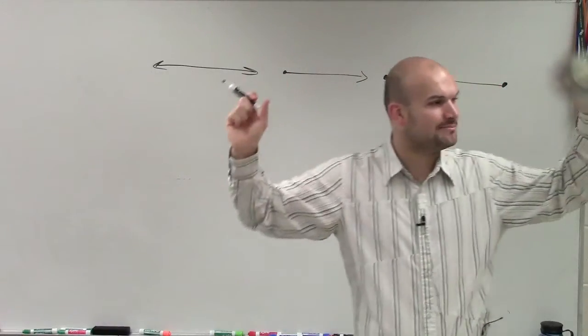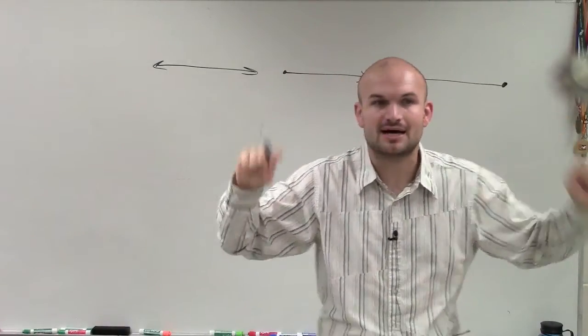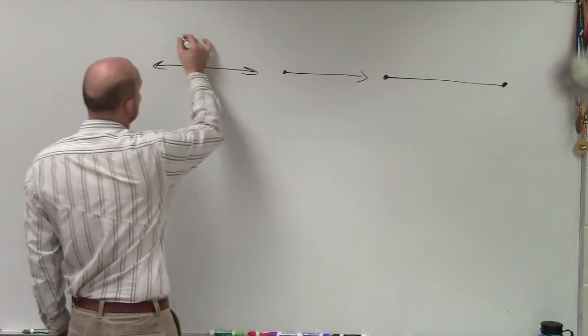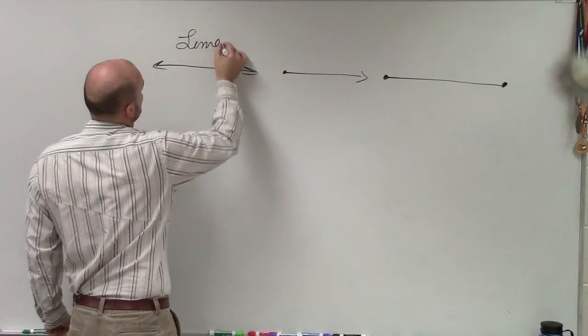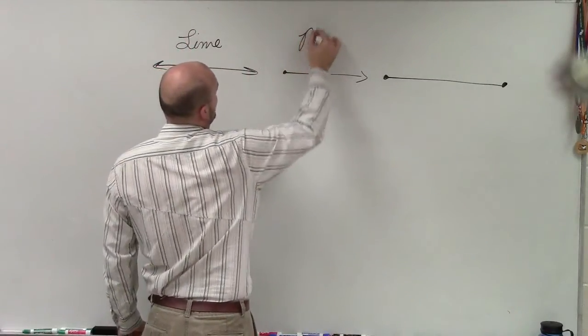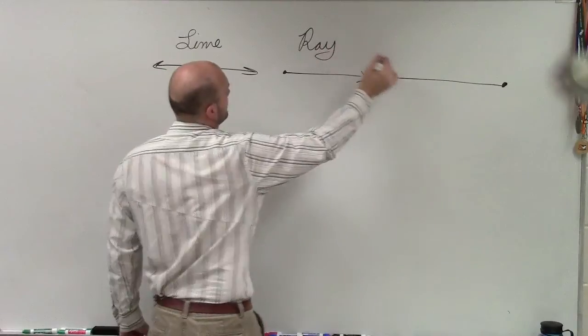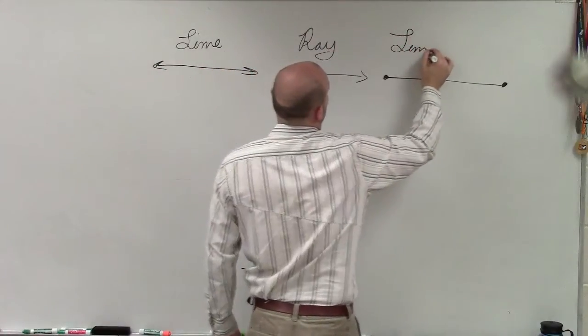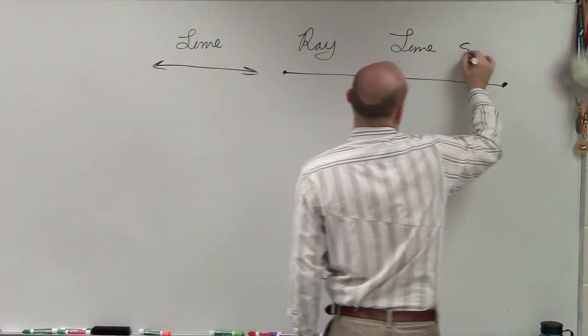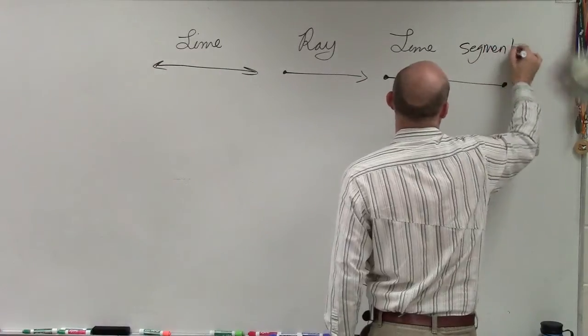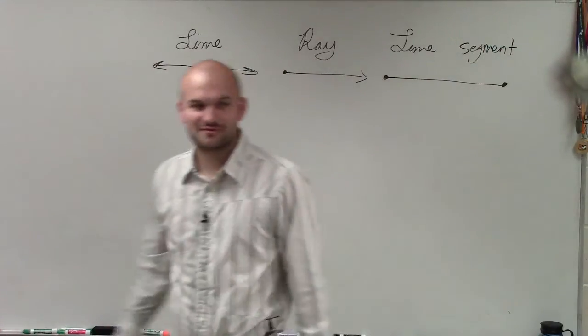And then if we contain both sides of the line with endpoints, then what we have is a line segment. So it goes from line, ray, segment. I don't want to make a, I chickened out on the cursive S, it's been a while.